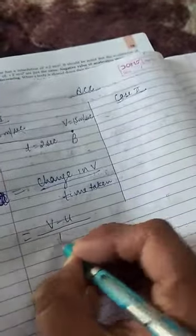Now if I want to find the acceleration from A to B, it will be change in velocity. Change in velocity means final velocity minus initial velocity, that is V minus U upon T.